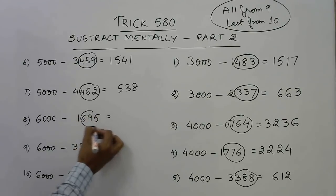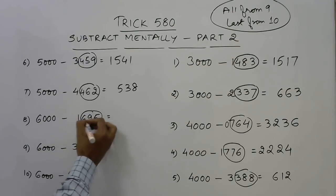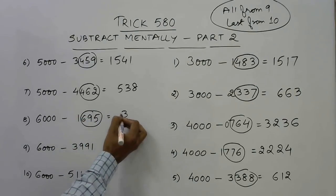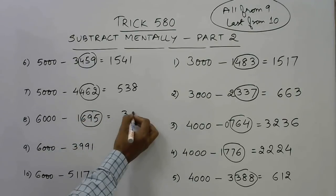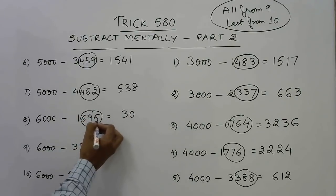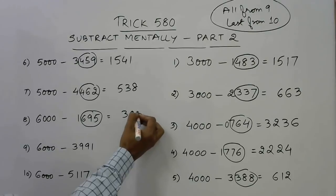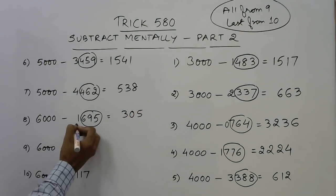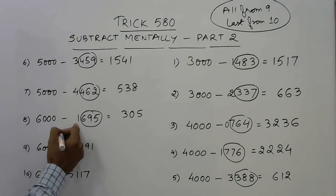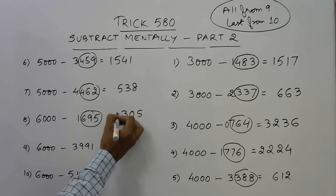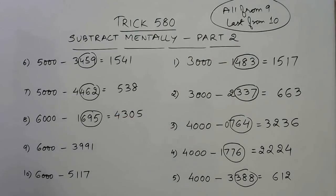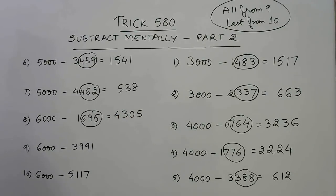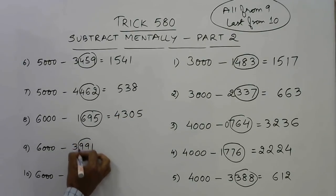Now 5000 minus 695. Last three digits 695: 9 minus 6 is 3, 9 minus 9 is 0, 10 minus 5 is 5. Increase the leading digit 0 by 1 to get 1, and 5 minus 1 is 4. So the answer is 4305.